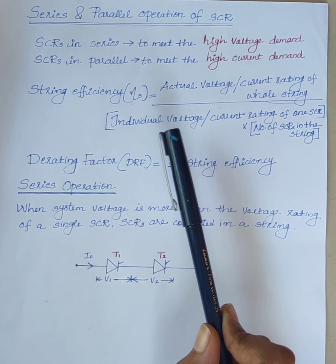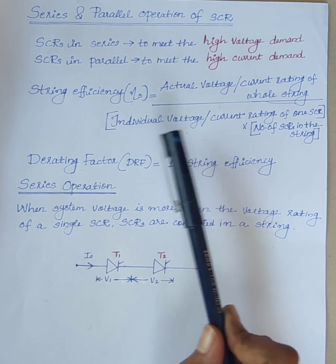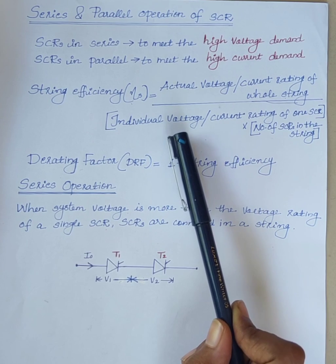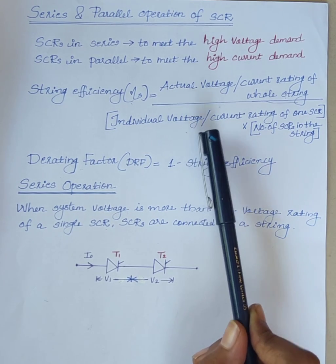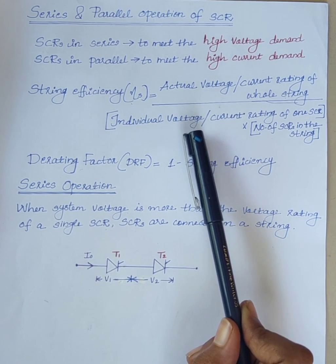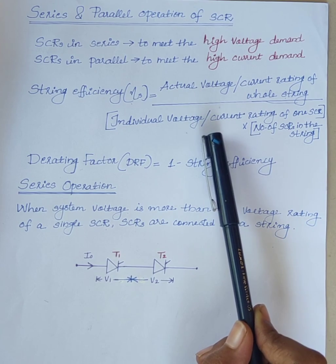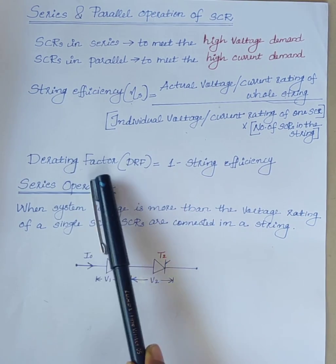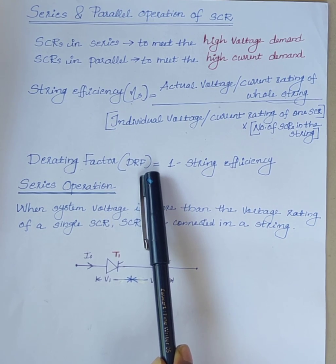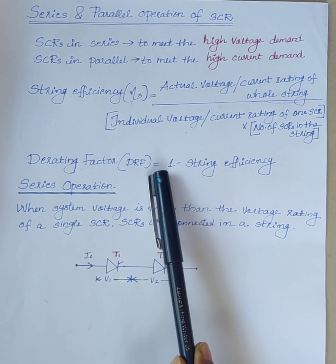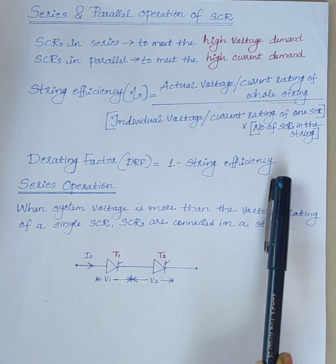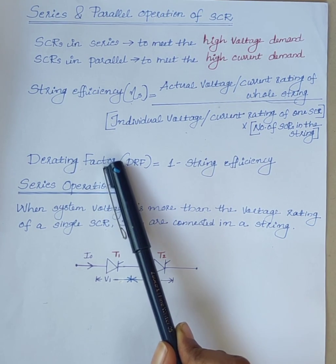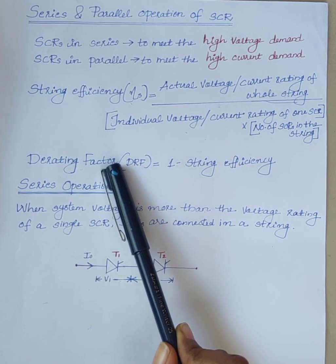This phenomenon increases the reliability of the string but reduces the utilization of each SCR. The measure of reliability of the string is given by a factor called D-rating factor. D-rating factor is equal to 1 minus string efficiency, and it is used to measure the reliability of the string.